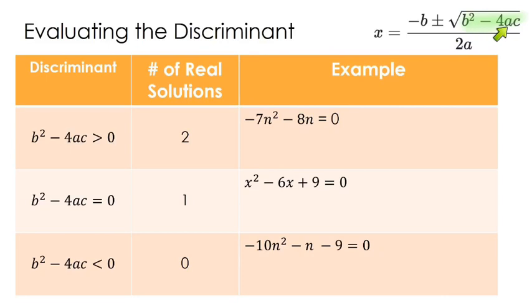So just by doing this little part, you could say do we have two solutions, one solution, or zero solutions? If that b squared minus 4ac is greater than zero, you're going to have two solutions. If b squared minus 4ac equals zero, you're going to have one solution. And if b squared minus 4ac is less than zero, you're going to have no solutions.